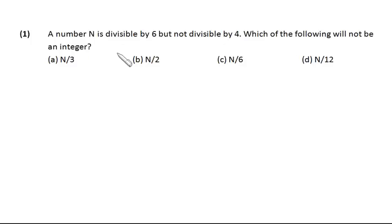We can choose a number that is divisible by 6 but not divisible by 4 and we'll try to eliminate the options. There is a number that is 18 which is divisible by 6 but not by 4.